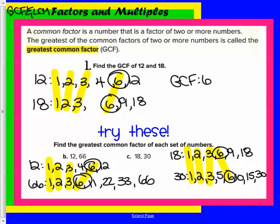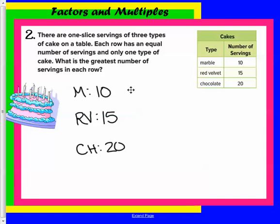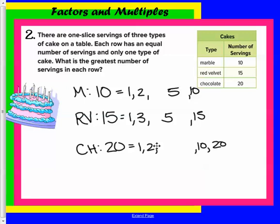Now let's look at a real-world situation. There are one-sized servings of three types of cake on a table. Each row has an equal number of servings and only one type of cake. What is the greatest number of servings in each row? We want to find the greatest common factor of the marble cake, the red velvet cake, and the chocolate cake. When we find the greatest common factors, we need to first find the factors of 10, which are 1 and 10, 2 and 5, and we have to stop because there are no more. For 15, 1 and 15 works, 2 doesn't work. Does 3 work? Yep, 3 and 5 work.